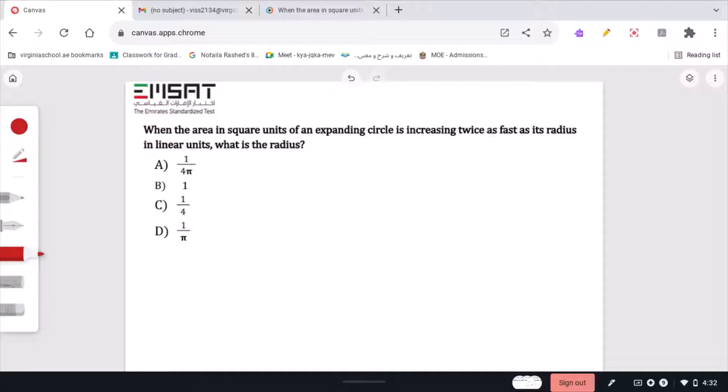The area of a circle is given by the formula A equals pi r squared.